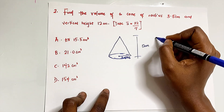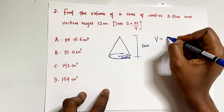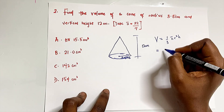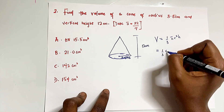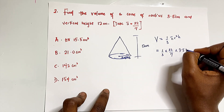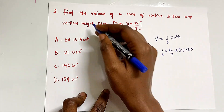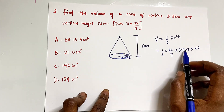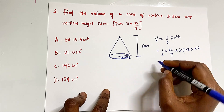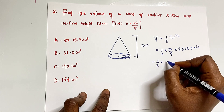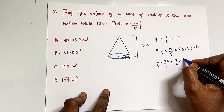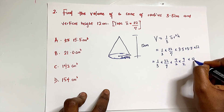The formula for the volume of a cone is V = 1/3 × π × r² × h. Substituting our values: 1/3 × 22/7 × 3.5 × 3.5 × 12. Converting 3.5 to a fraction gives 7/2, so we have 1/3 × 22/7 × 7/2 × 7/2 × 12/1.